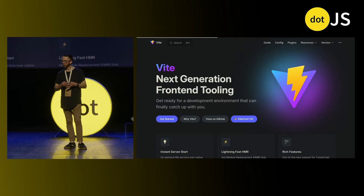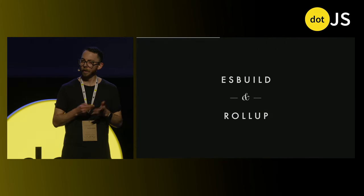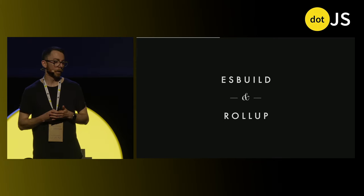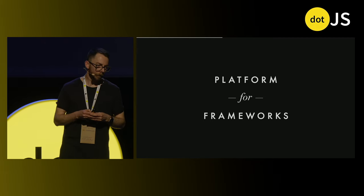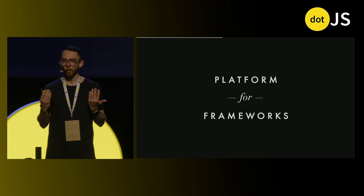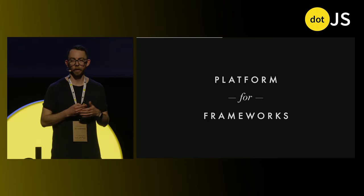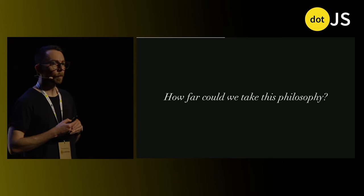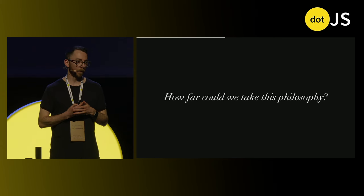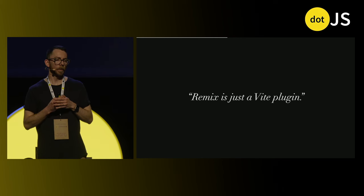If you're not familiar with Vite, it presents itself as next-generation front-end tooling, built on top of existing bundlers. During development it uses ESBuild, and then in production it uses Rollup — although in the future it's going to be using the Rolldown project for both. What's interesting for me is that Vite is, as I think of it, a platform for frameworks. If you're building a framework and you look at what Vite is doing, it's solving a lot of the problems that previously you had to take on yourself. Our mantra was that we wanted Remix to be just a Vite plugin.